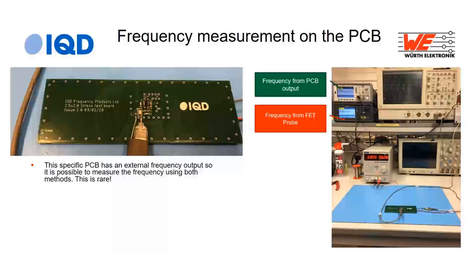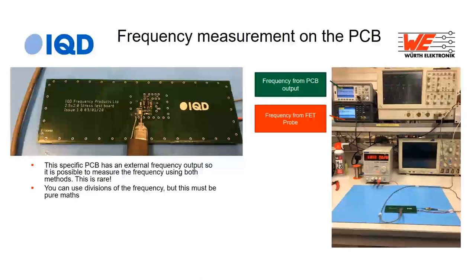The green trace on the oscilloscope is a square wave coming directly from the buffered output — that's why I designed this PCB. If your PCB has a frequency output that's a mathematical derivative — a multiple or division of the crystal frequency — it's perfectly fine to use that, as long as you follow the maths and work in parts per million rather than hertz.